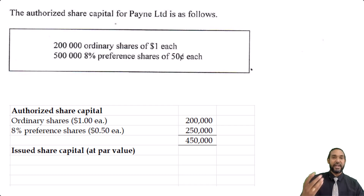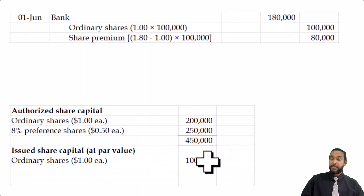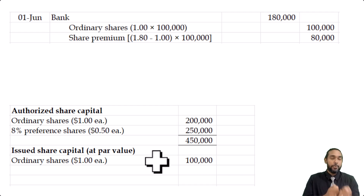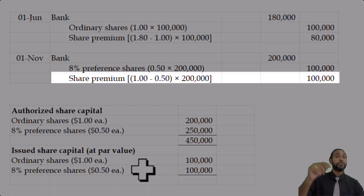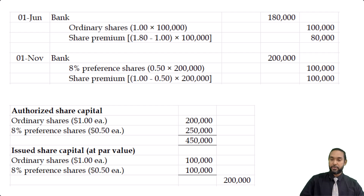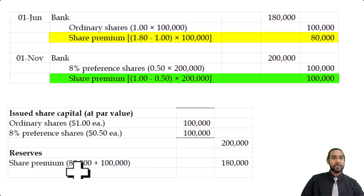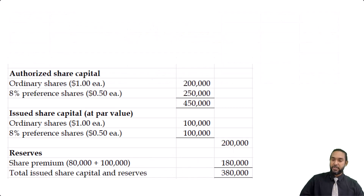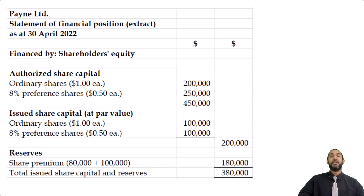After the authorized section, we show issued share capital where our calculations come into play. For ordinary shares: 100,000 were issued at a par value of $1, so we show $100,000. For preference shares: 200,000 were issued at a par value of $0.50, giving $100,000. Adding those together gives $200,000 of issued share capital at par. For reserves, we only have share premium: $80,000 from the ordinary share issue and $100,000 from the preference share issue. Total shareholders' equity comes to $380,000. The authorized total of $450,000 is not added to anything — it's there for informational purposes only.